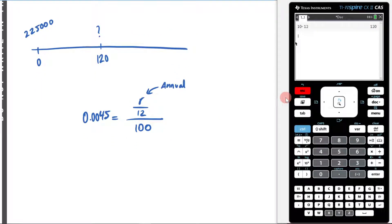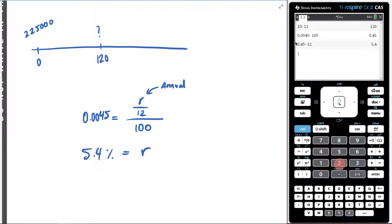What I need is this R value here. So what I have to do is I have to do the opposite. So instead of dividing by 100, I'm going to take 0.0045 and times it by 100. And then I need to get rid of this divided by 12. So now I'm going to times it by 12. So that means 5.4% annual interest rate. That is my R value.